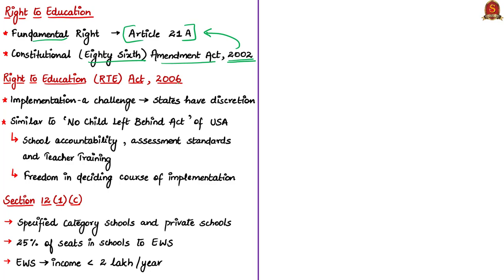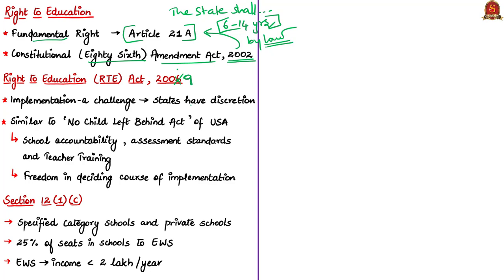Article 21A reads that the state shall provide free and compulsory education to all children of the age of 6 to 14 years in such manner as the state may by law determine. This provides the way for compulsory education to children of this age group, and we have the Right to Education Act 2009 to provide guidelines and enable this fundamental right. The author states that the implementation of this act has been a challenge for most states.